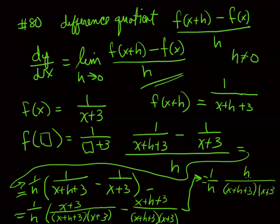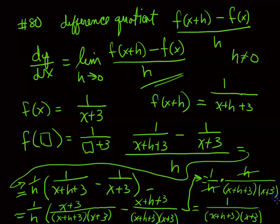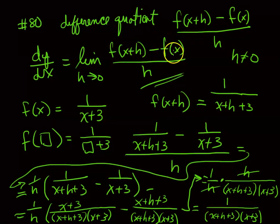We have (1/h) times (−h) over (x + h + 3)(x + 3). The h cancels — as they say in mathematics, we got the h out of there. The final simplified answer is −1 / [(x + h + 3)(x + 3)]. Leave it in factored form; don't multiply it out. This is your final reduced answer, and it represents the setup for the definition of the derivative.